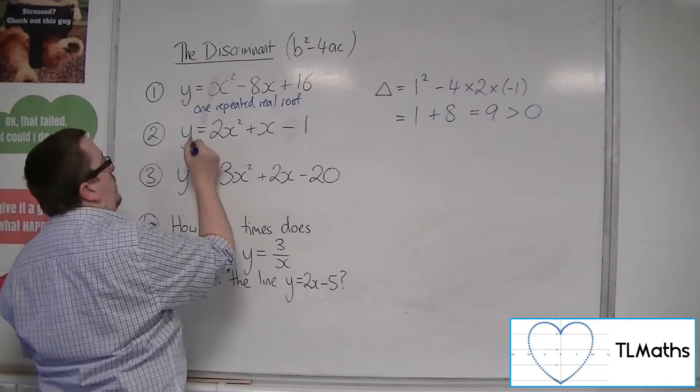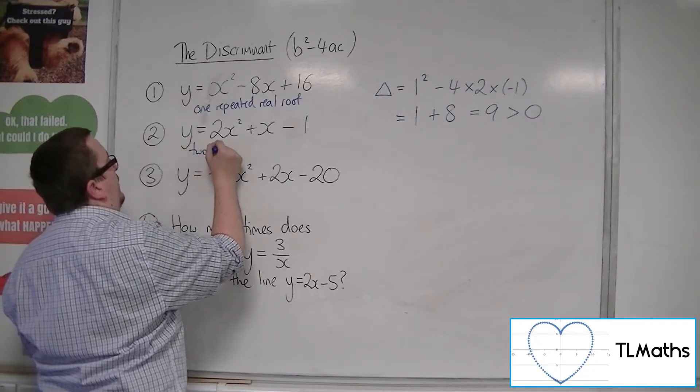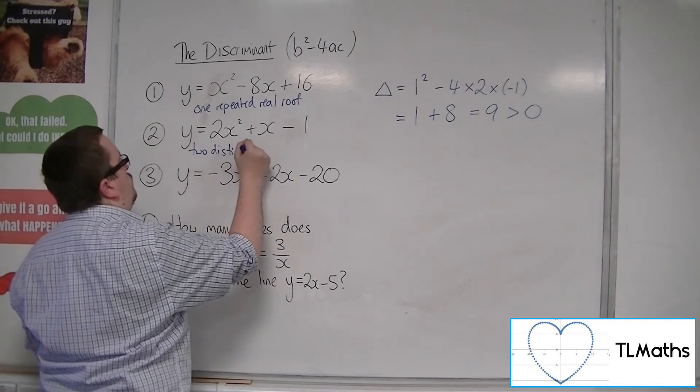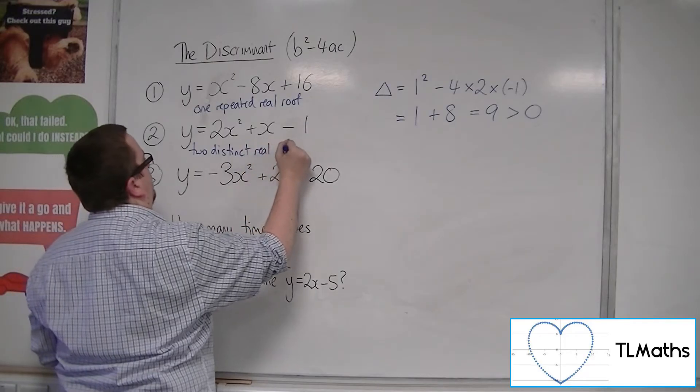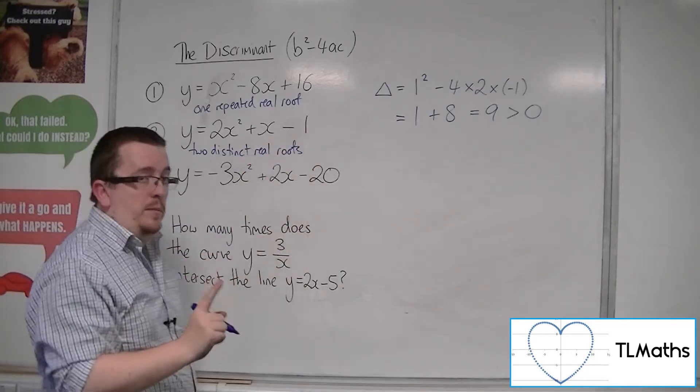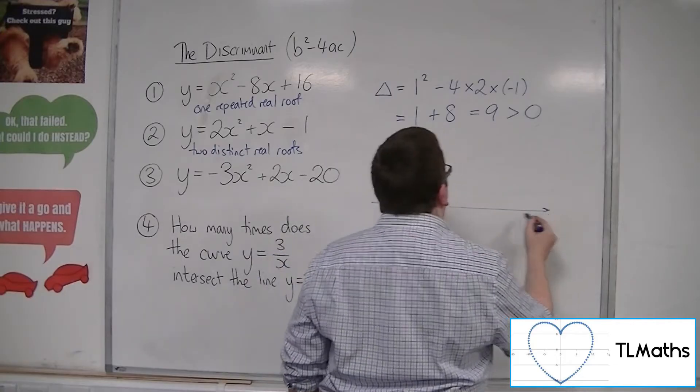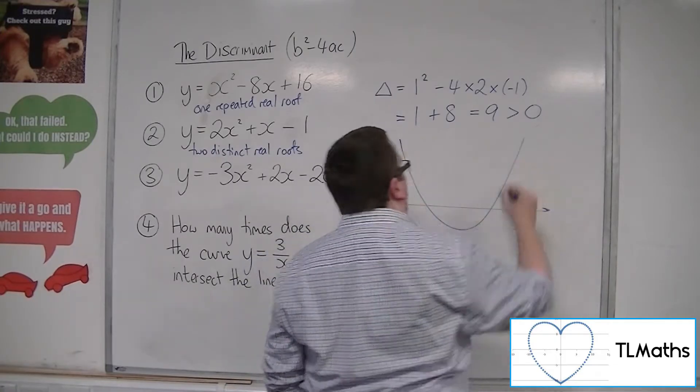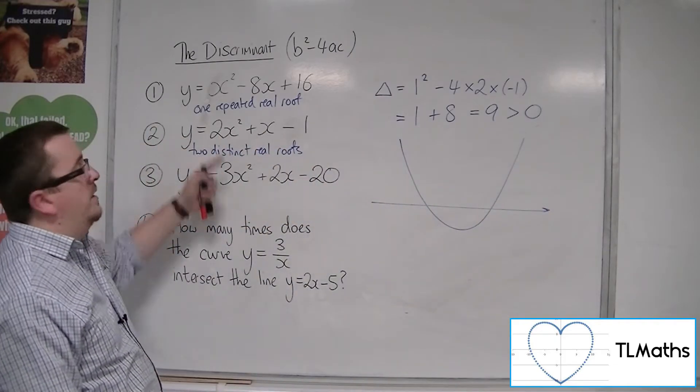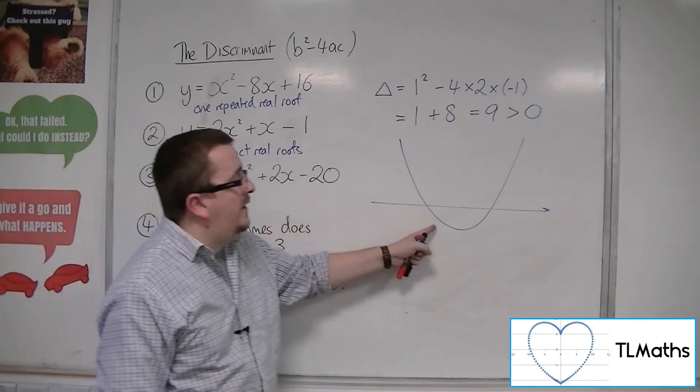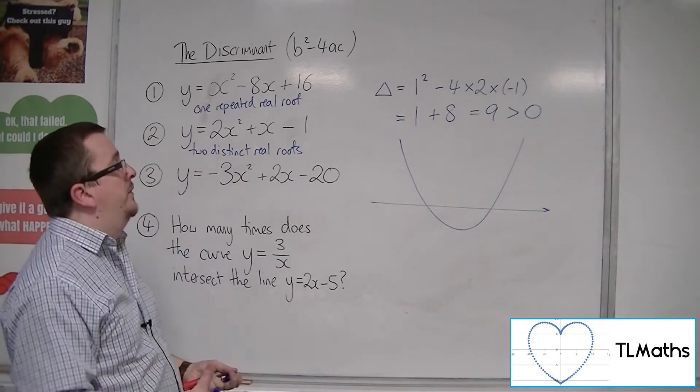So there are two distinct real roots in this case. So what that's telling me is that this curve, because it's got a positive x squared, positive coefficient of x squared, it's crossing the x-axis at two distinct points.